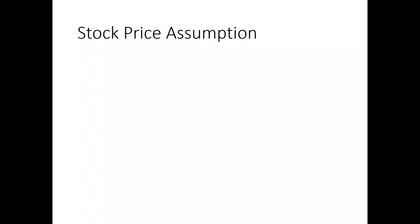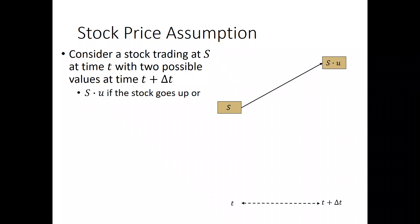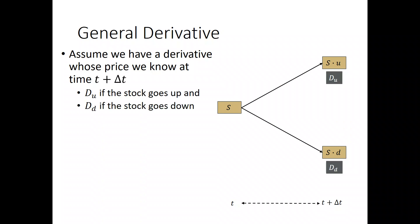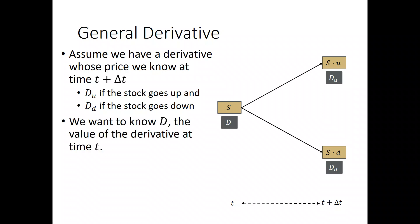So let's go through our assumptions. We're going to assume we have a stock trading at S at time T, with two possible values at time T plus delta T. If the stock goes up, the stock is trading at S times U. If the stock goes down, the stock is trading at S times D. Now let's say we have a general derivative, and we know its price at time T plus delta T. So either the derivative is worth D sub U if the stock goes up, or it's worth D sub D if the stock goes down. What we're trying to find is D, the value of the derivative, at time T.